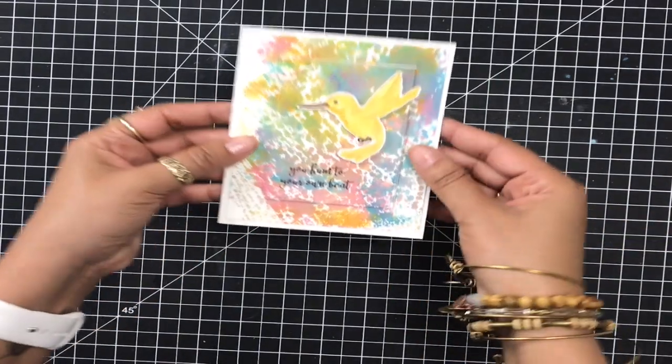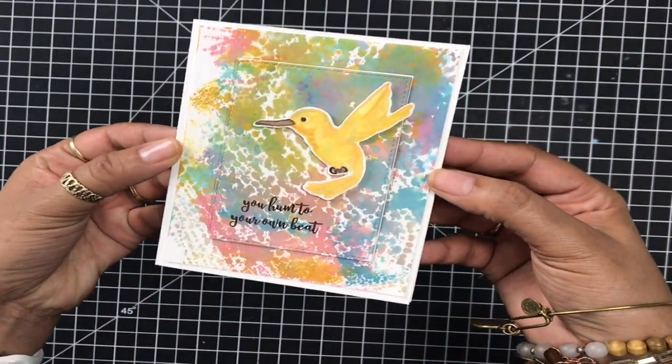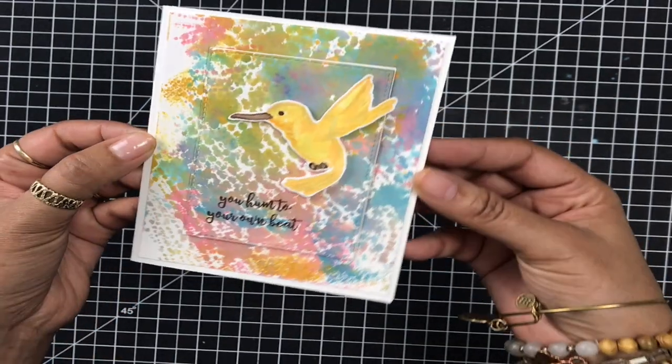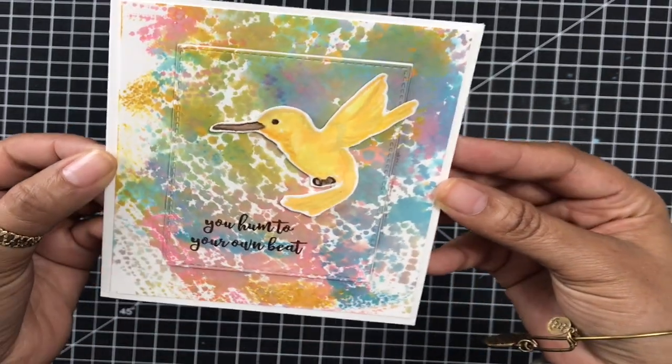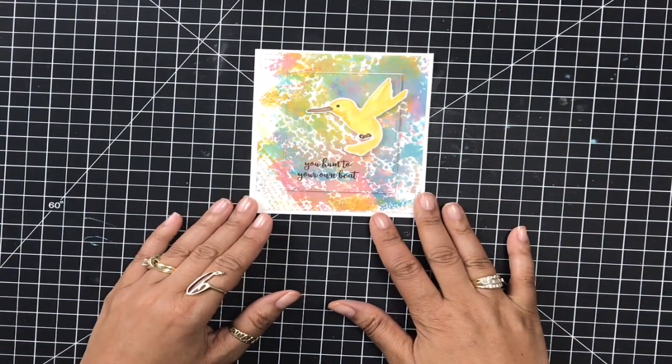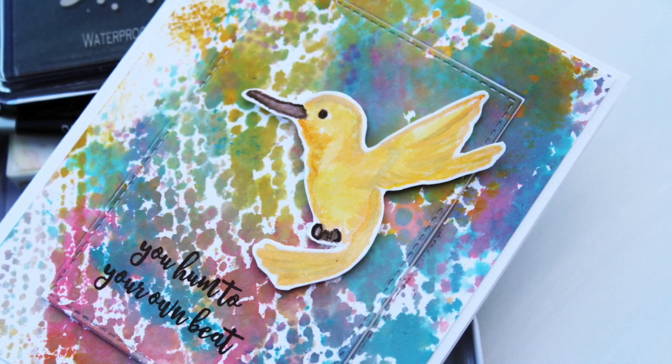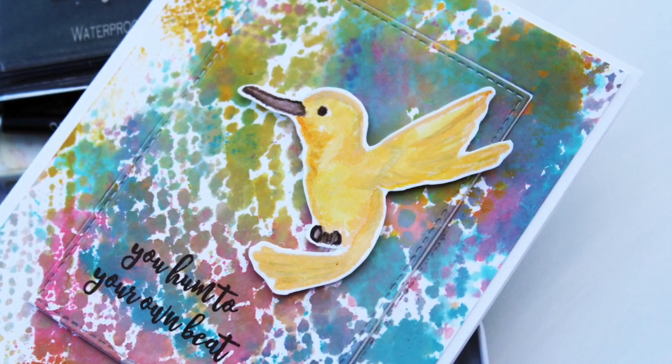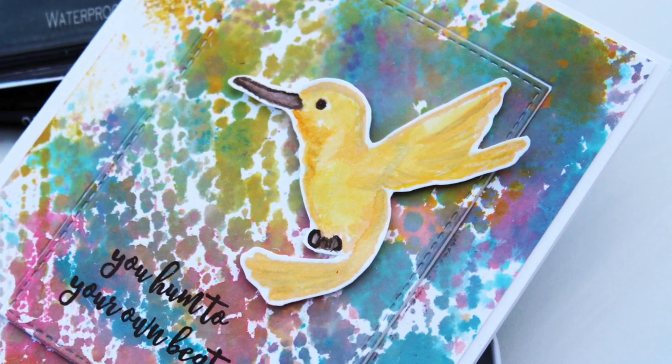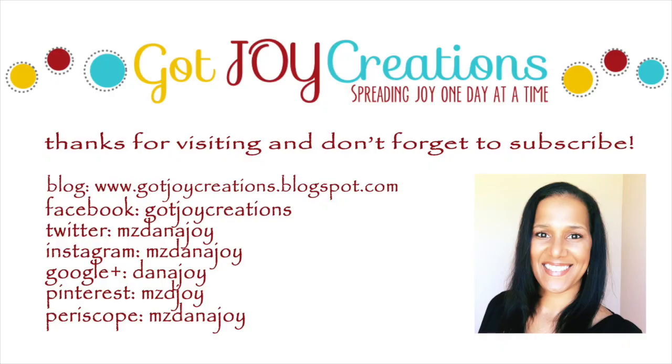Alrighty, and there we go. And look how fabulous. It does not even look like I stamped out that image. It totally looks like I hand-drew that. And that's what we want, you guys, when we do that no-line coloring. Alright, everybody, that is the card for today. Don't forget to get your pre-order in on www.inkon3.com. Alright, I will see you guys in another video soon. Don't forget to subscribe and make sure to give me a thumbs up. See you guys soon. Bye-bye.